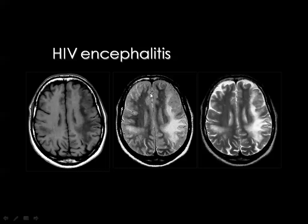The HIV virus may also affect the brain, resulting in encephalitis. On MRI, T1 and T2 weighted images show multiple bilateral cerebral lesions of low signal in T1 and high signal in T2.